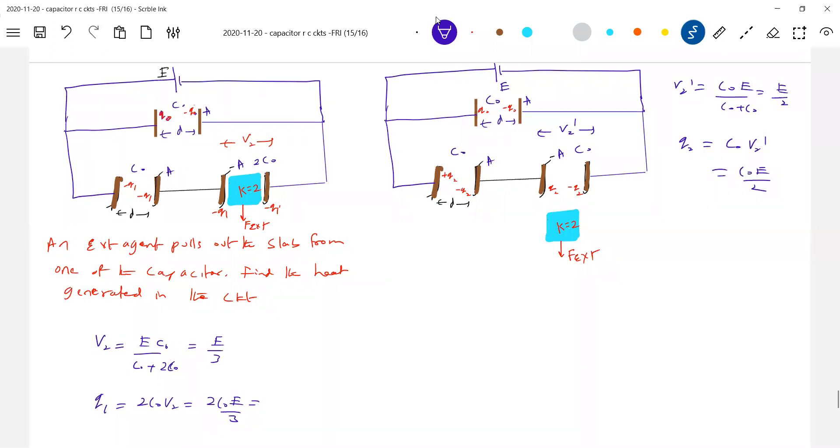Okay, these are the charges. Now external agent does work here also. External agent does work to pull out the slab. So the initial energy in the system, let it be Ui, the final energy in system, let it be Uf. What about the charge, increase or decreased?